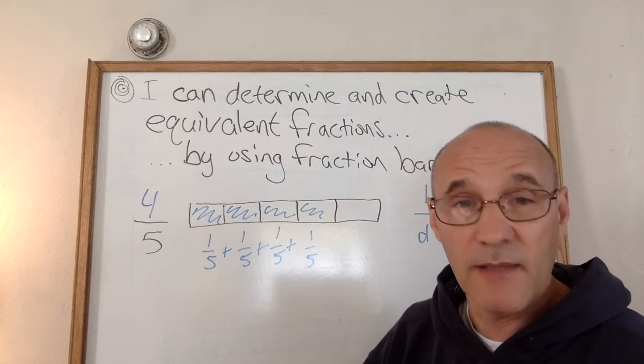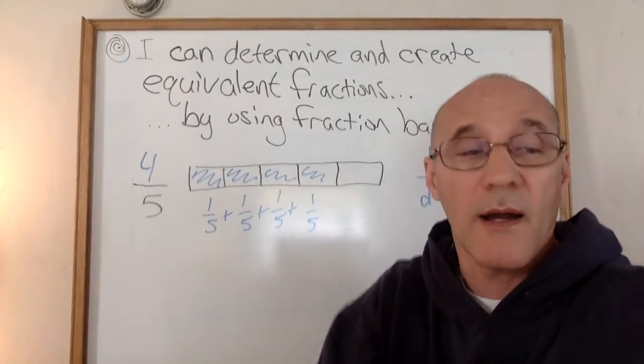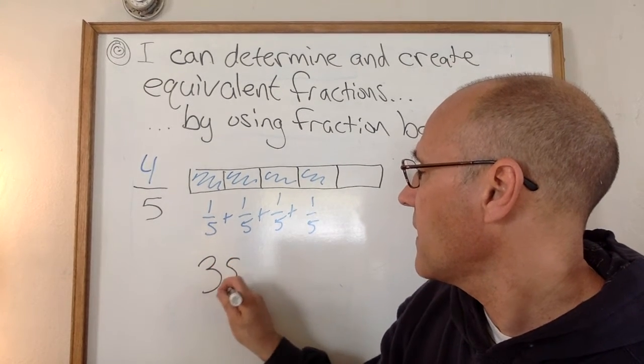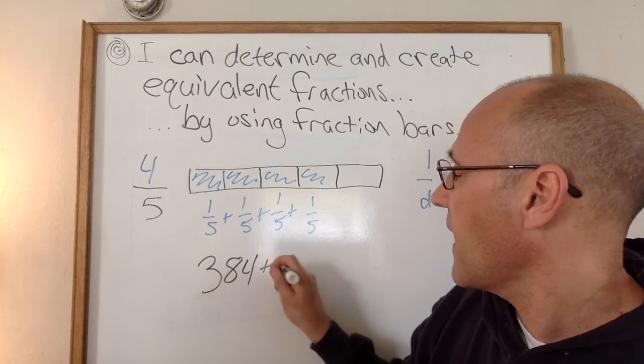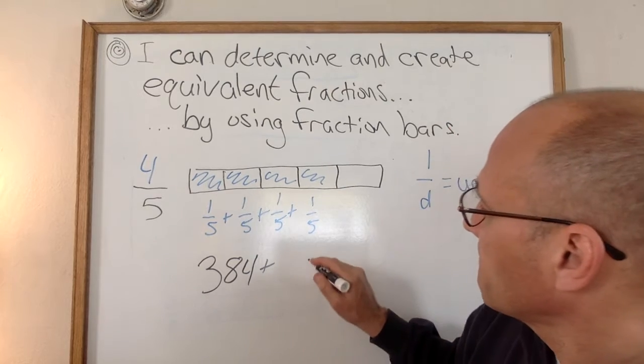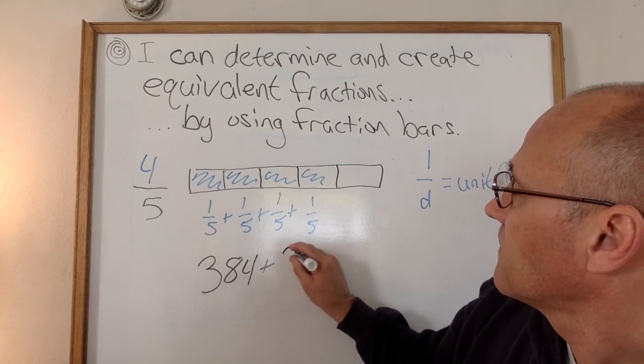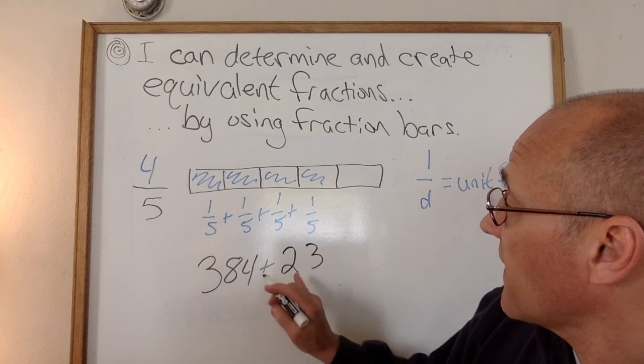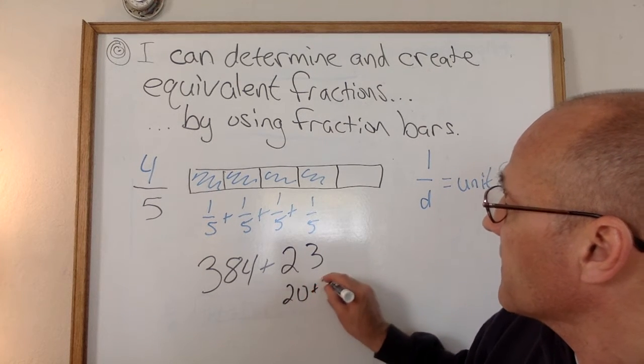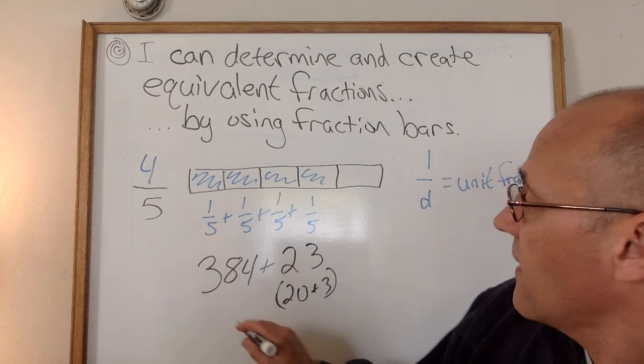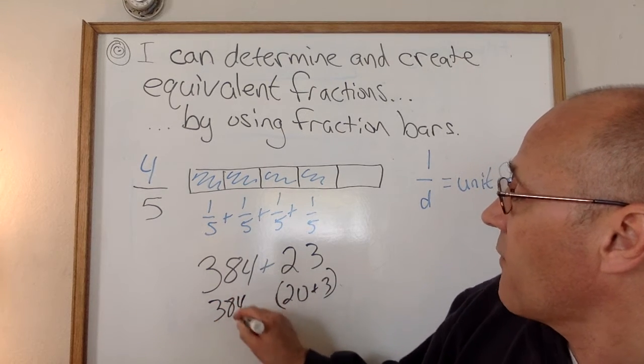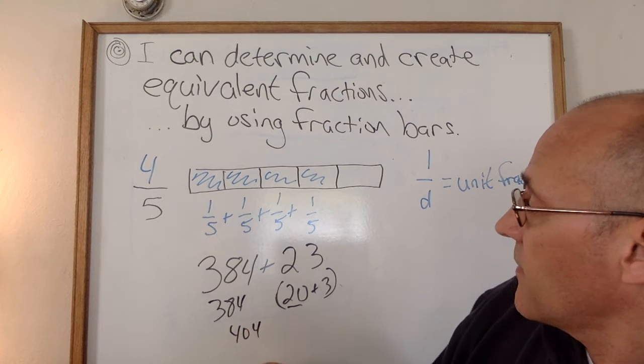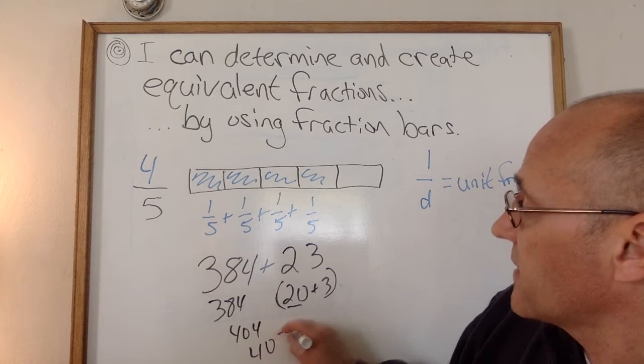It comes in handy just like when you are adding. If I was adding 384 and 23, I might want to think, well, 23 is 20 plus 3. And then just go 384 plus the 20 is 404 plus the 3 is 407.